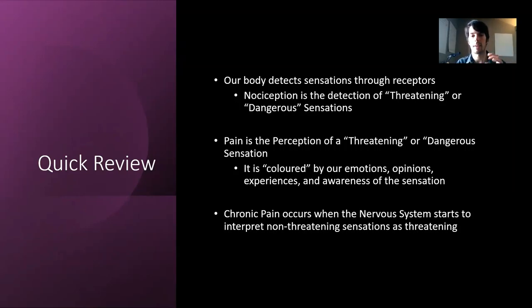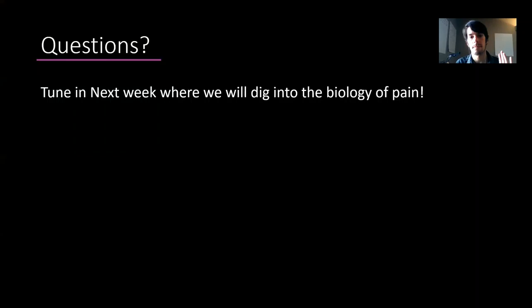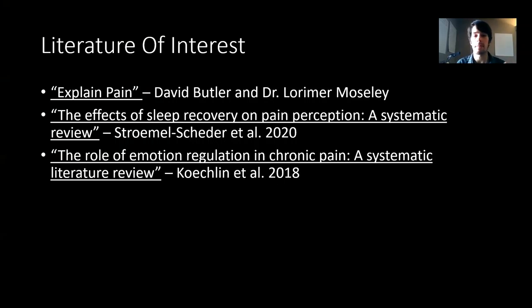If we become hyper-fixated on the potential for damage or are concerned about moving an injured area, this can facilitate that pain perception pattern and create habituation within the brain, creating more pain. Persistent pain occurs when the nervous system and body start to interpret non-threatening sensations as threatening, and also create pain endogenously through persistent stress, persistent anxiety, and persistent nerve habituation in those areas. Next week we're going to dig into more of the biology of pain, the physiology, what nerves are, how nerves interact, how they send information to the brain, and what can happen to them when we experience pain or persistent pain.